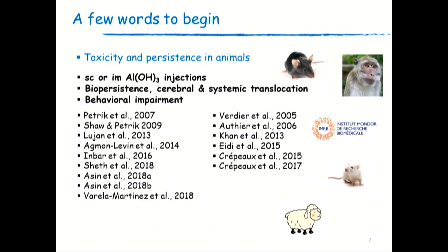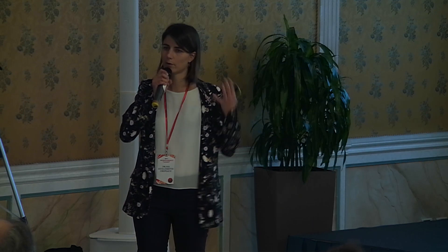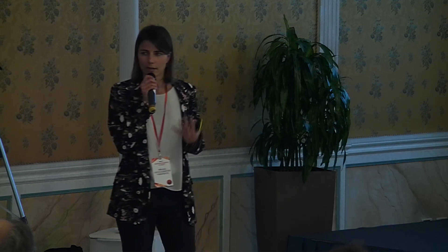What is very interesting is that it's not just studies on mice — it includes studies on monkeys, mice, rats, and sheep. We have very complementary different animal models showing the same kind of effects that we observe in humans.